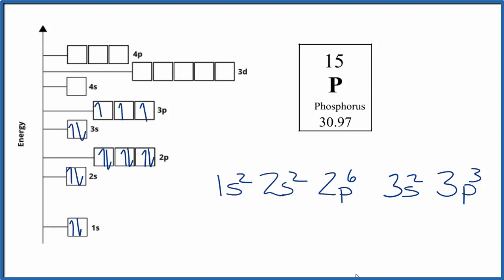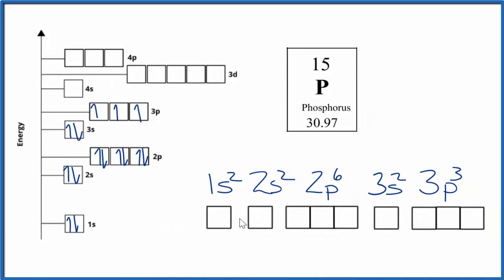Sometimes you'll see it written like this here, and it's the same thing, it's just horizontal. And again, this is just describing where the electrons are around the nucleus of the phosphorus atom.